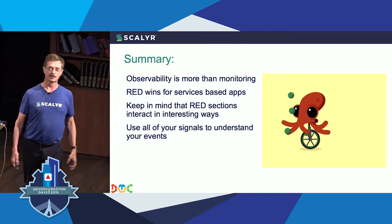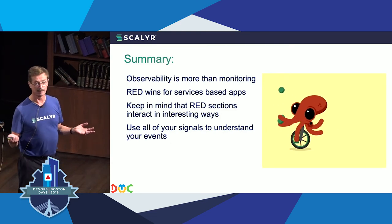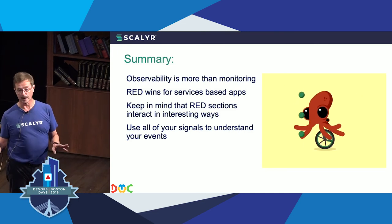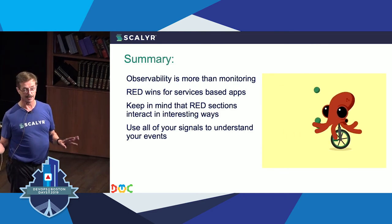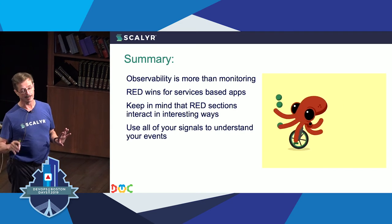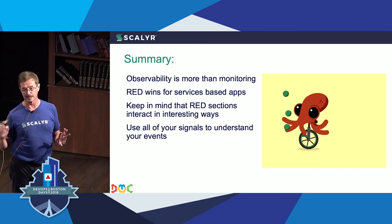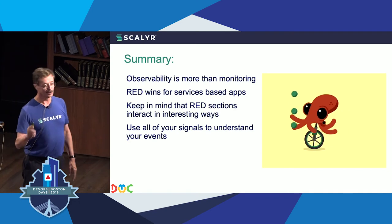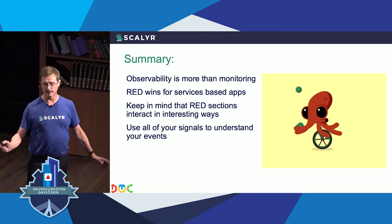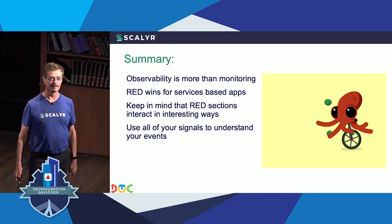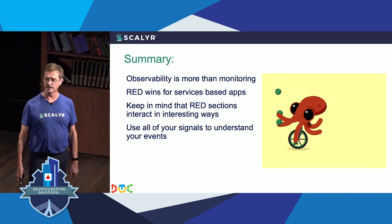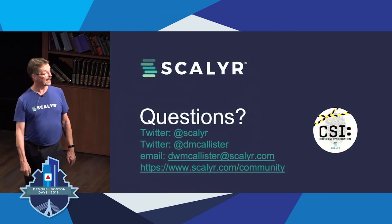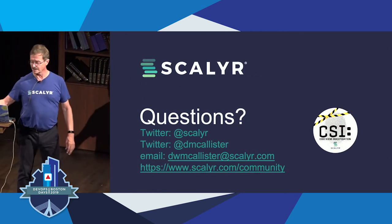In short: observability is more than monitoring, but we start with monitoring. RED can work in strange and mysterious ways to give you all sorts of information — be careful that the information you're looking at is the information you expect to see, and use all your signals. If you've got Twitter feeds, figure out how to bring them in as one of your signals for moving forward in observability. I think I've got a few minutes for questions.